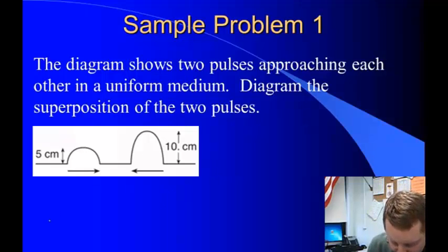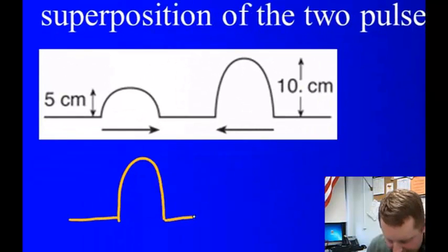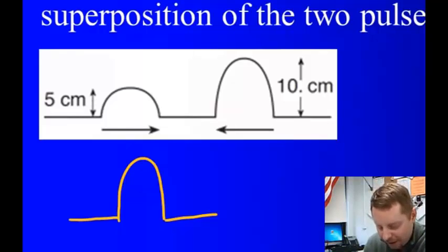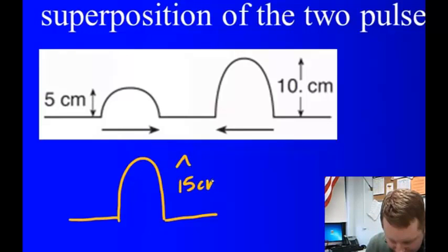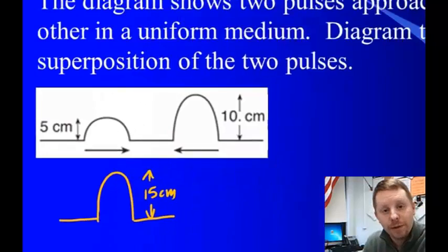Where if one has a magnitude of 5 centimeters, the other has a magnitude of 10 centimeters, the total magnitude here should be about 15 centimeters when they're added together using the principle of superposition.